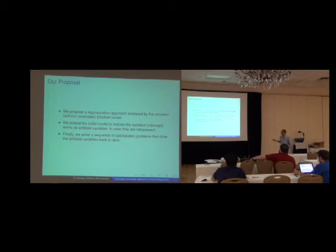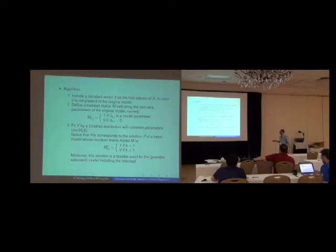And in the next step we solve a sequence of optimization problems that drive the artificial variables back to zero. So we introduce penalties for the artificial variables in the model. Here we consider that for each model we have a corresponding matrix, a boolean matrix M indicating which parameters are in the original model. In this case M_KG is one and which coefficients are zero. So I will use this later.